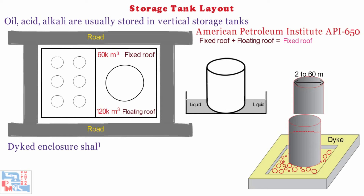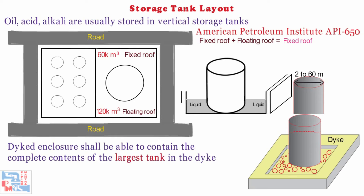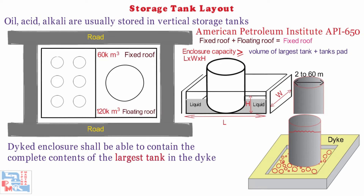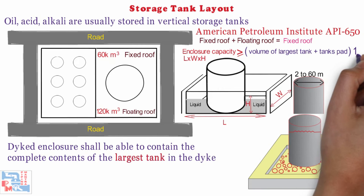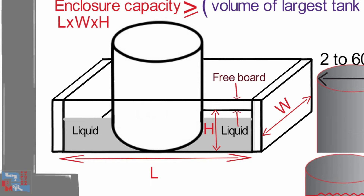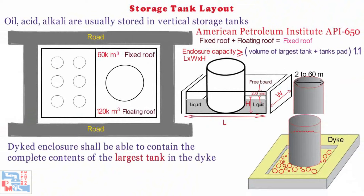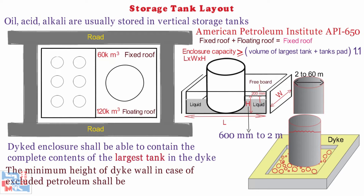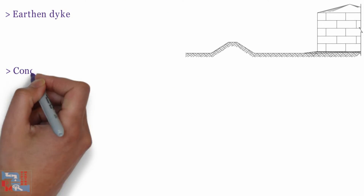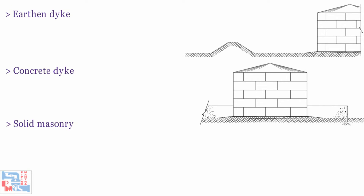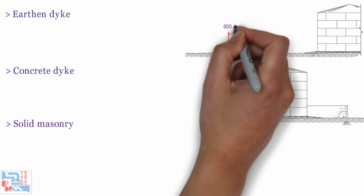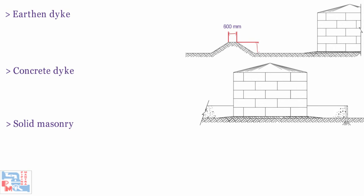The dike enclosure shall be able to contain the complete contents of the largest tank in the dike in any emergency. The enclosure's capacity — volume L × W × H — shall be equal to or greater than the volume of the largest tank and tank-pad volumes within the dike, with at least 10% added for safety. A freeboard of 200 mm above the calculated liquid level shall be considered for fixing the dike height. The dike height including freeboard shall be at least 600 mm and shall not exceed 2 meters above average inside grade level. The dike wall — made of earth, concrete, or solid masonry — shall withstand hydrostatic load. Earthen dike walls shall have no less than 0.6 meters wide flat section on top, a minimum height of 900 mm, and a width-to-height ratio of 1.5 to 1.